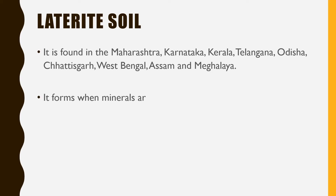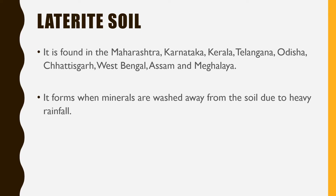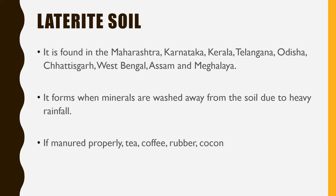Laterite soil is formed when minerals are washed away from the soil due to heavy rainfall. So when there is a lot of rainfall and important minerals are washed away from the soil, laterite soil is formed. If the soil is properly manured — that means if we provide proper manure and fertilizers — we can grow certain crops like tea, coffee, rubber, coconut, and fruits.